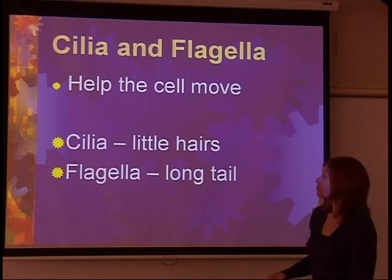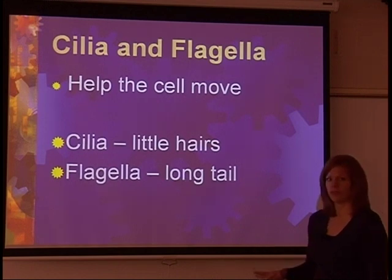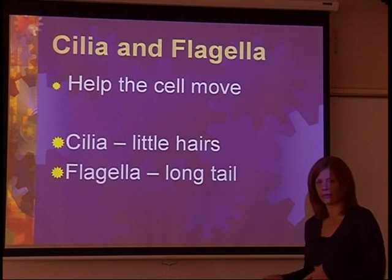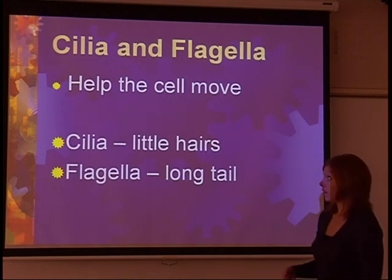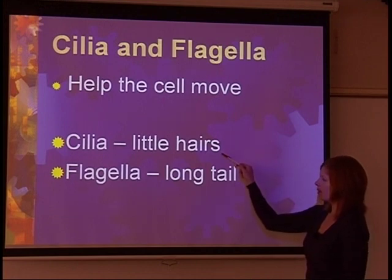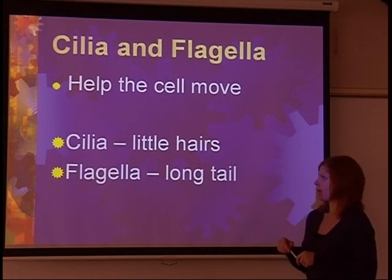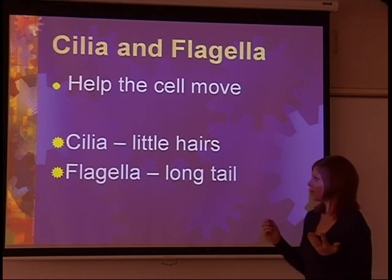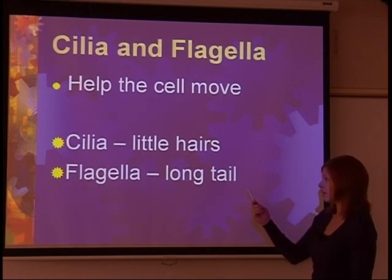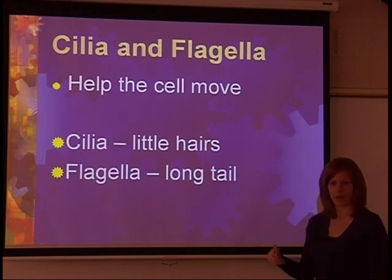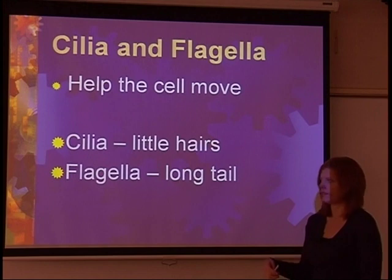And then lastly, we have structures called the cilia and flagella, which have to do with helping the cell move. Some cells need to move and some cells do not. If a cell does need to move, they may have these structures. Cilia are little hairs that will be around the cell, and the little hairs will move and the cell will also move. Flagella is really just a long tail that a cell may have that allows that cell to propel itself to where it needs to get to.